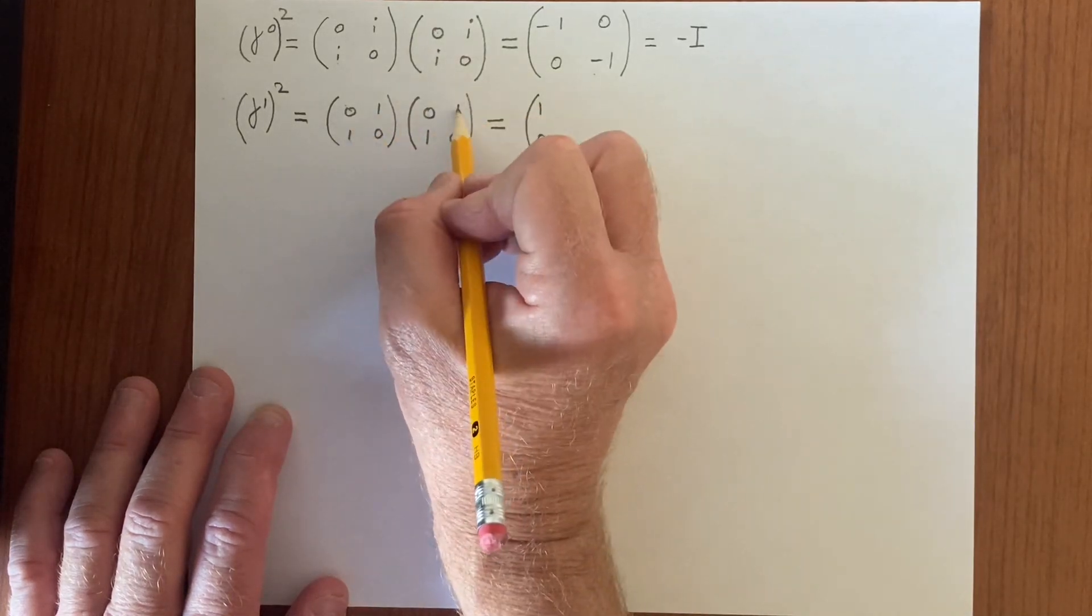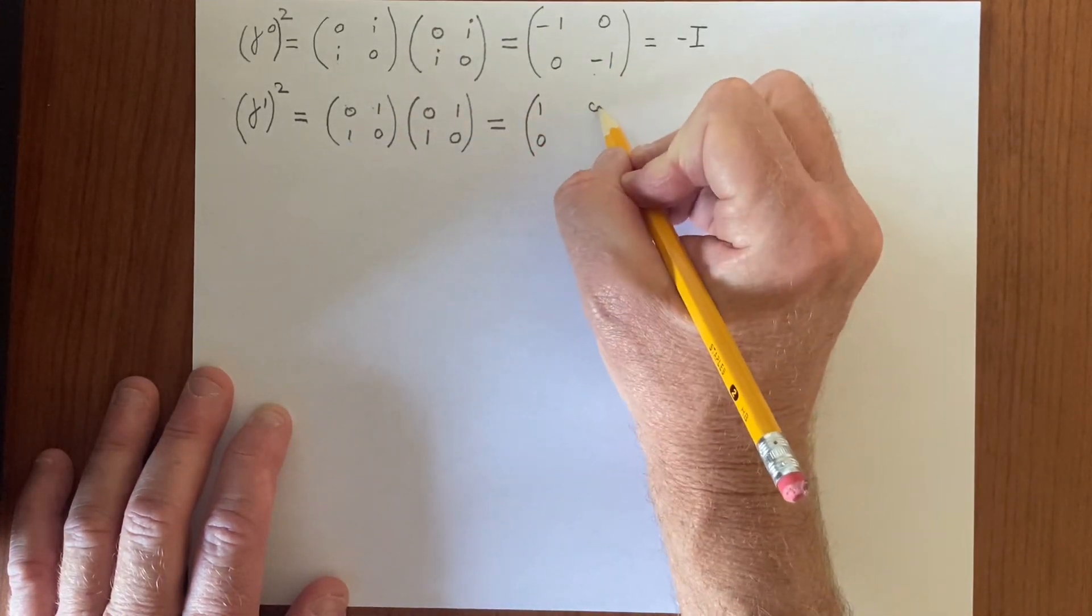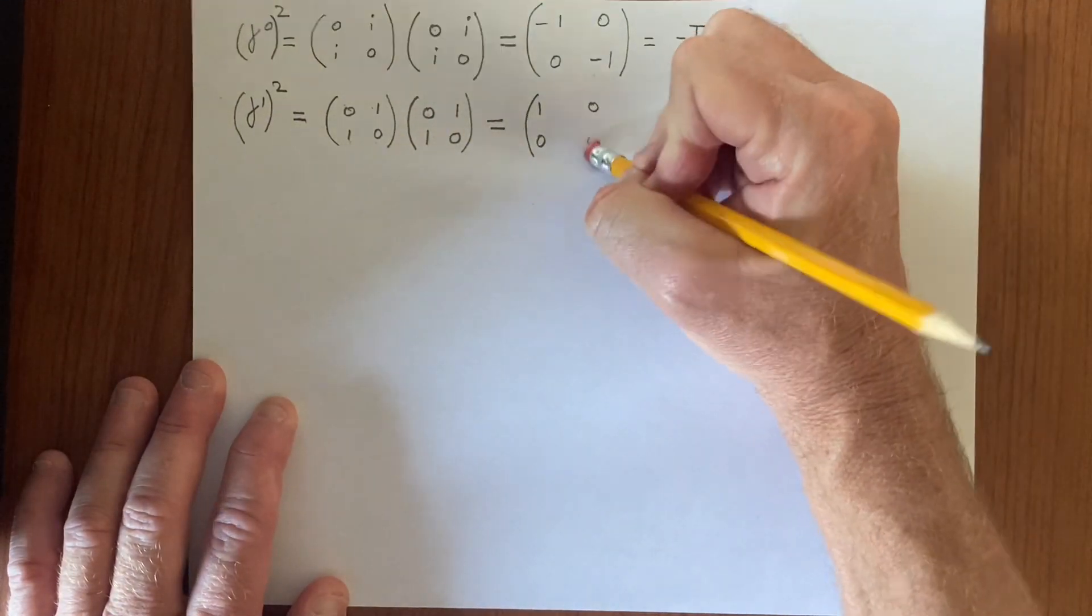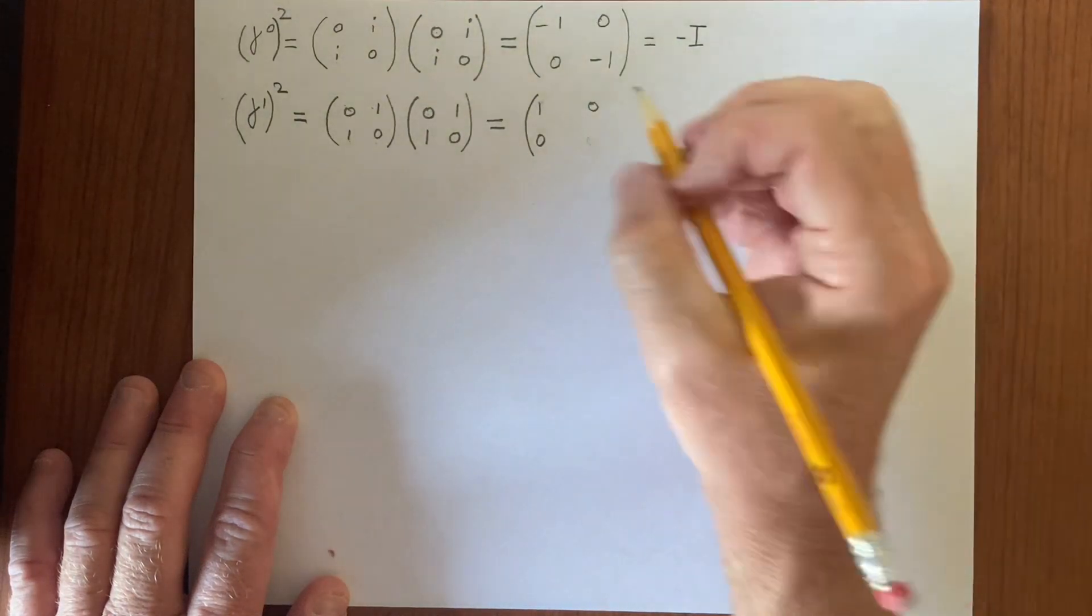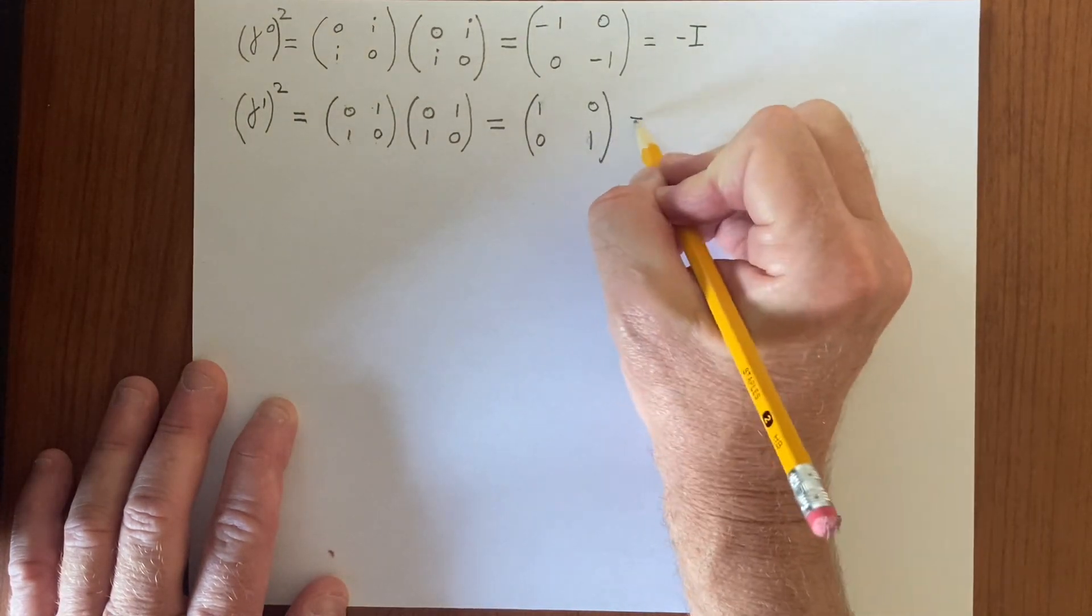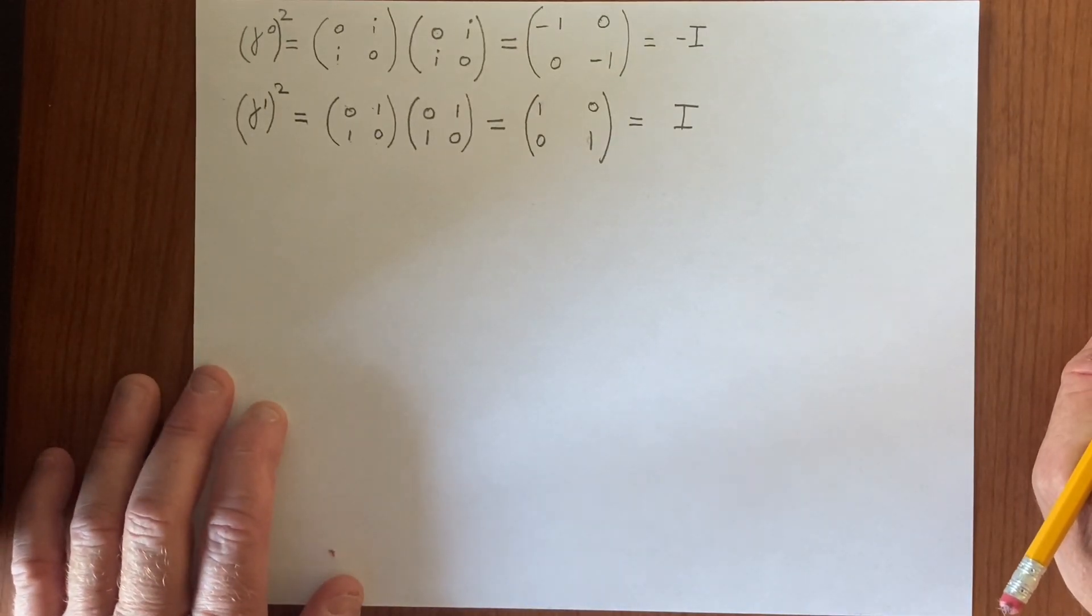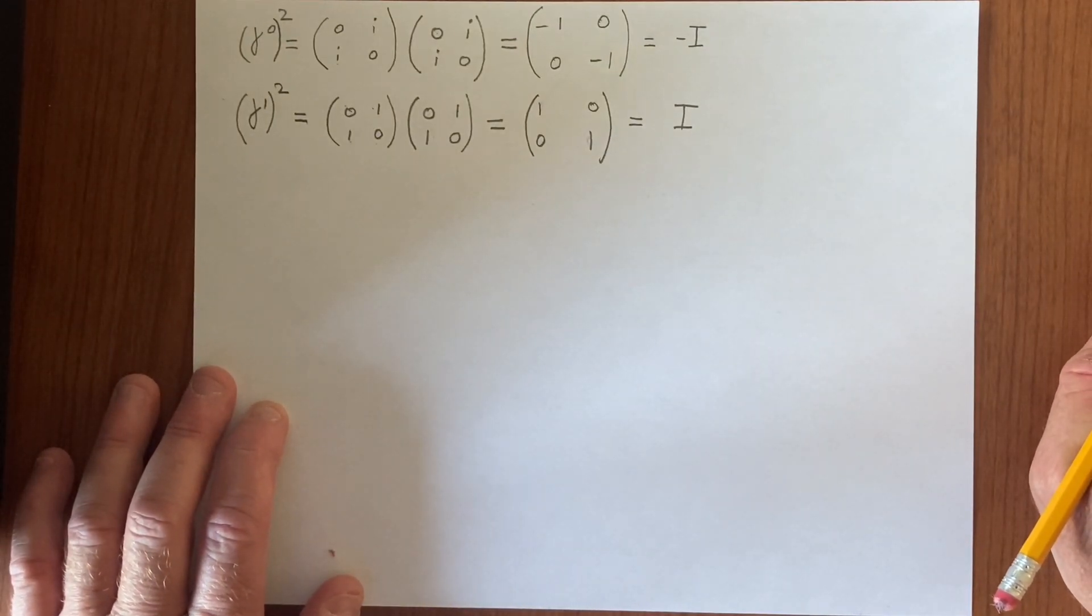0, and 1 times 0 is 0, and then here 1 times 1 is 1 plus 0 is 1. So we get the identity matrix. So we get 1 as a matrix. So this is what we had before.